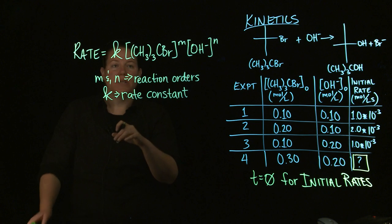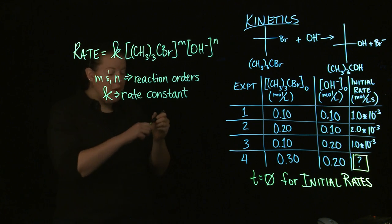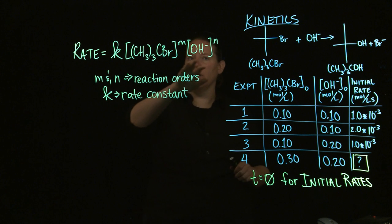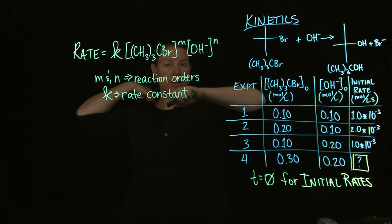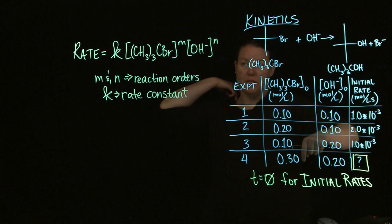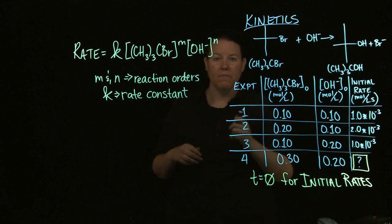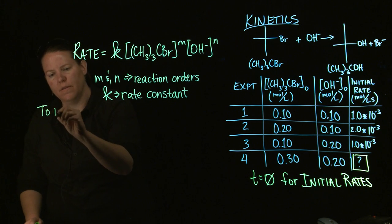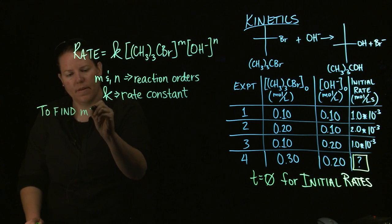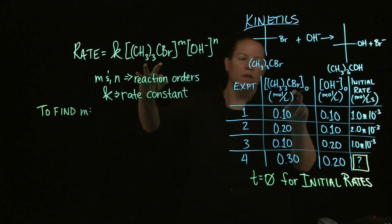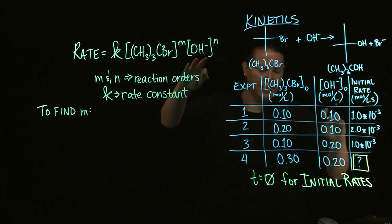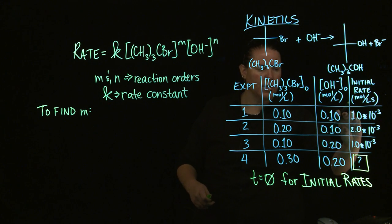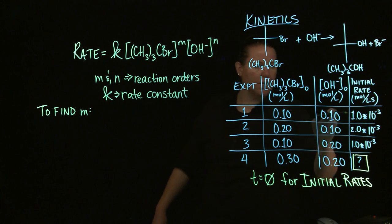What I'm going to do is compare two experiments. I'll use the general rate law for two different experiments, and since K is a constant, it's the same for all experiments. I'm trying to find M first. To find M, you want to vary that reactant but hold the other one constant — you want it to cancel out. So I'm going to pick experiments 1 and 2 to find M, because that's where OH⁻ is constant, and I have all the information I need.